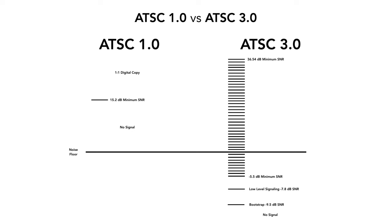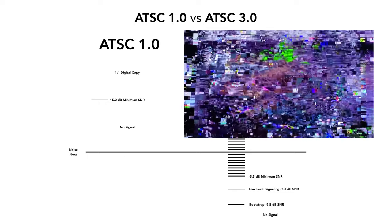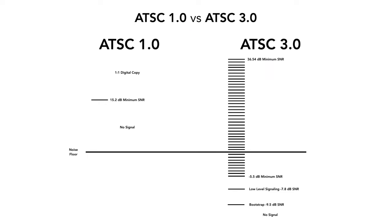While analog systems visually and audibly degrade, digital systems do not. They hold their integrity for the entire time until they reach that minimum SNR requirement. In the case of ATSC 1.0, all the way until 15.2 decibels, it is a one-to-one copy of what it looks like coming from the broadcast transmitter. Once it hits that point, it spends about a half a decibel pixelating, and once it drops below that point, the signal's gone.